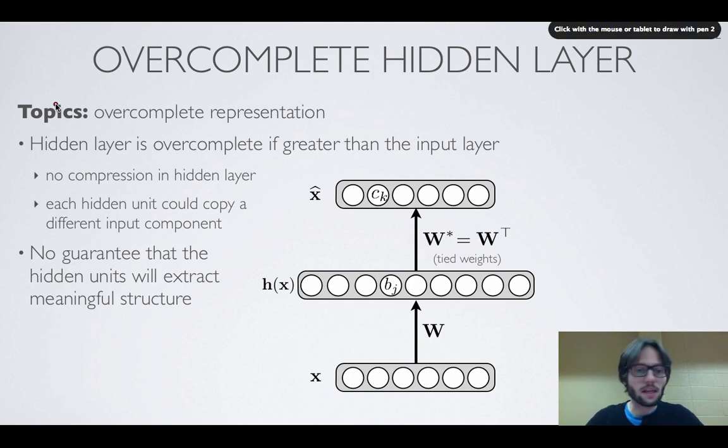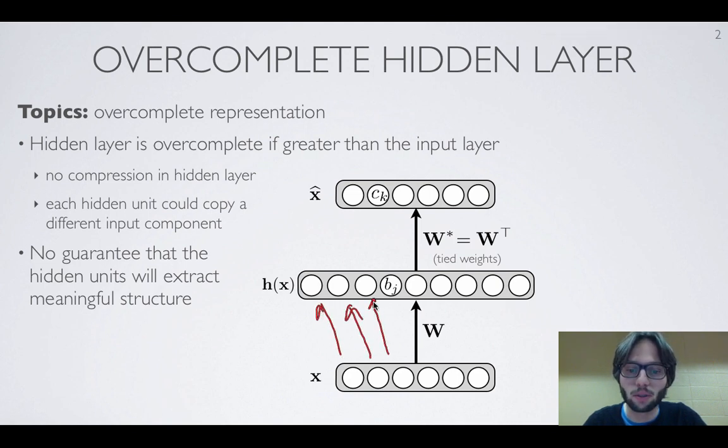So again, here we're trying to fix this problem with regular autoencoders with over-complete hidden layers, which can actually do a perfect job by just copying individual units in the input vector.